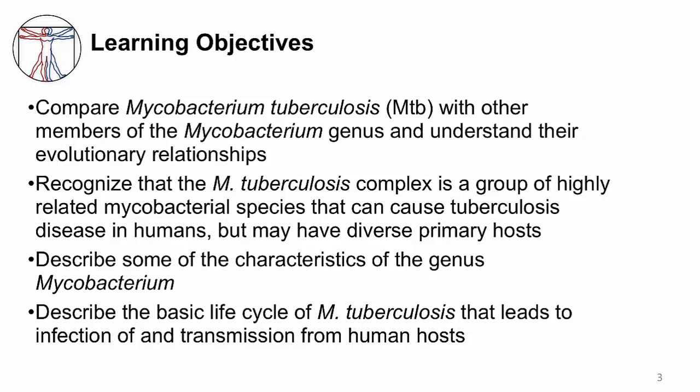The learning objectives are to compare Mycobacterium tuberculosis with other members of the Mycobacterium genus and understand their evolutionary relationships. To recognize that the M. tuberculosis complex is a group of highly related mycobacterial species that can cause tuberculosis disease in humans but may have diverse primary hosts. To describe some of the characteristics of the genus Mycobacterium and describe the basic life cycle of M. tuberculosis that leads to infection of and transmission from human hosts.